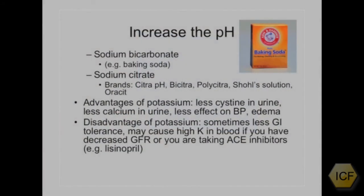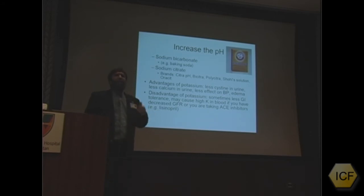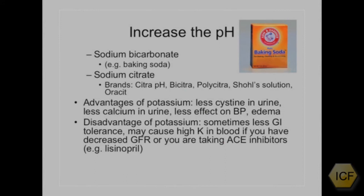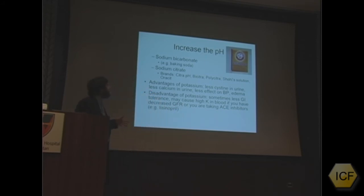You can also increase the pH with sodium citrate or sodium bicarbonate. Baking soda is simply sodium bicarbonate — an inexpensive way to alkalinize the urine. Brands like Citra pH, Bicitra, and polycitra are sodium citrates. However, we usually prefer potassium salts over sodium salts because sodium is associated with more cysteine in the urine. Additionally, higher sodium intake increases urinary calcium, raising the risk of calcium phosphate stones, which is not a concern with potassium.